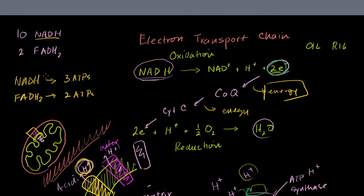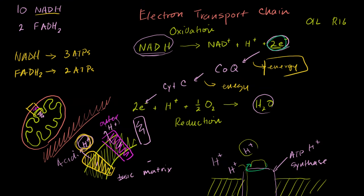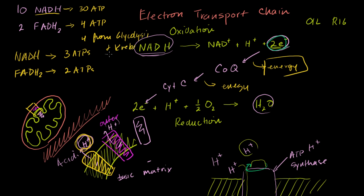When you have 10 NADHs, on average each NADH produces enough of a proton gradient to generate three ATPs. Each FADH2, on average, produces enough of a hydrogen gradient to produce two ATPs. So with 10 NADHs, in this ideal world, that's 30 ATPs. Our two FADH2s produce four ATPs. And then from glycolysis we had two net ATPs directly produced, and from the Krebs cycle we had two ATPs directly produced — so four from glycolysis and Krebs combined. That gets us once again to our magic 38 ATP from one molecule of glucose. And now you have a pretty good grasp of cellular respiration.